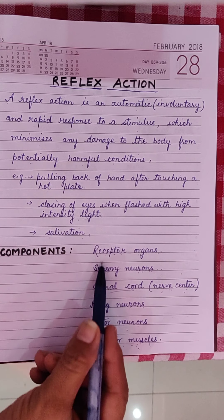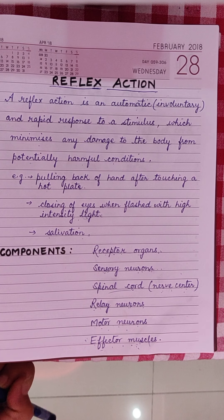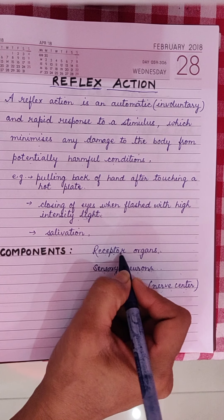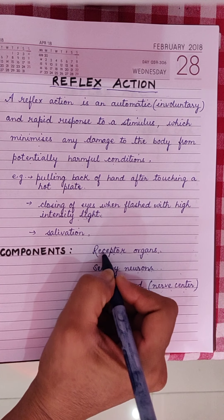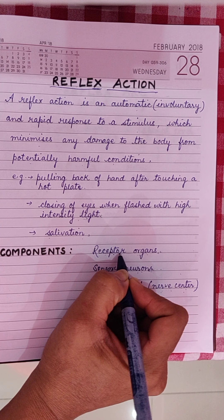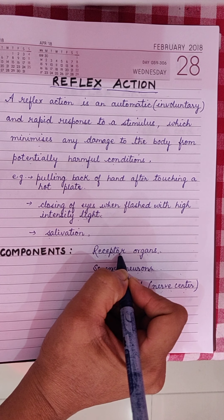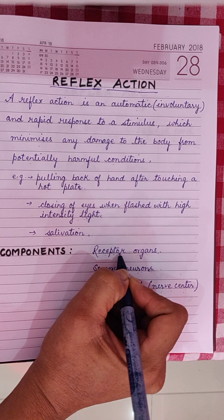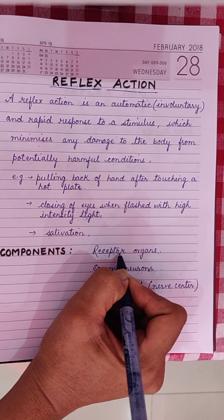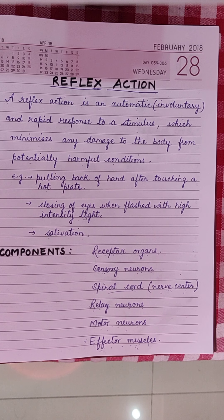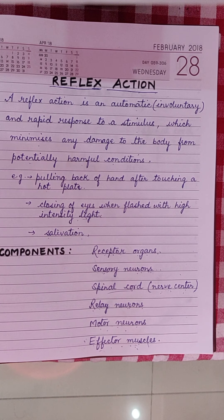In a reflex action, different tissues are involved. First, the stimulus is received by a receptor organ — these are sense organs with special detectors that detect pain, heat, cold, smell, and so on. For example, the nose has olfactory receptors, the skin has thermoreceptors, and the tongue has gustatory receptors.